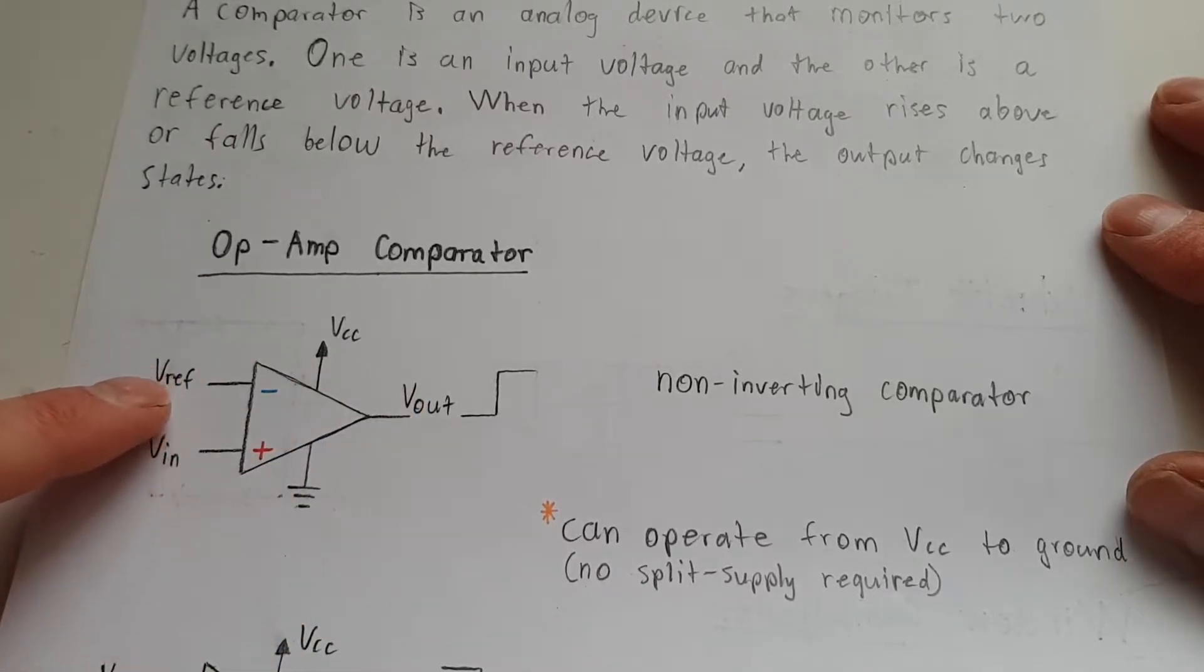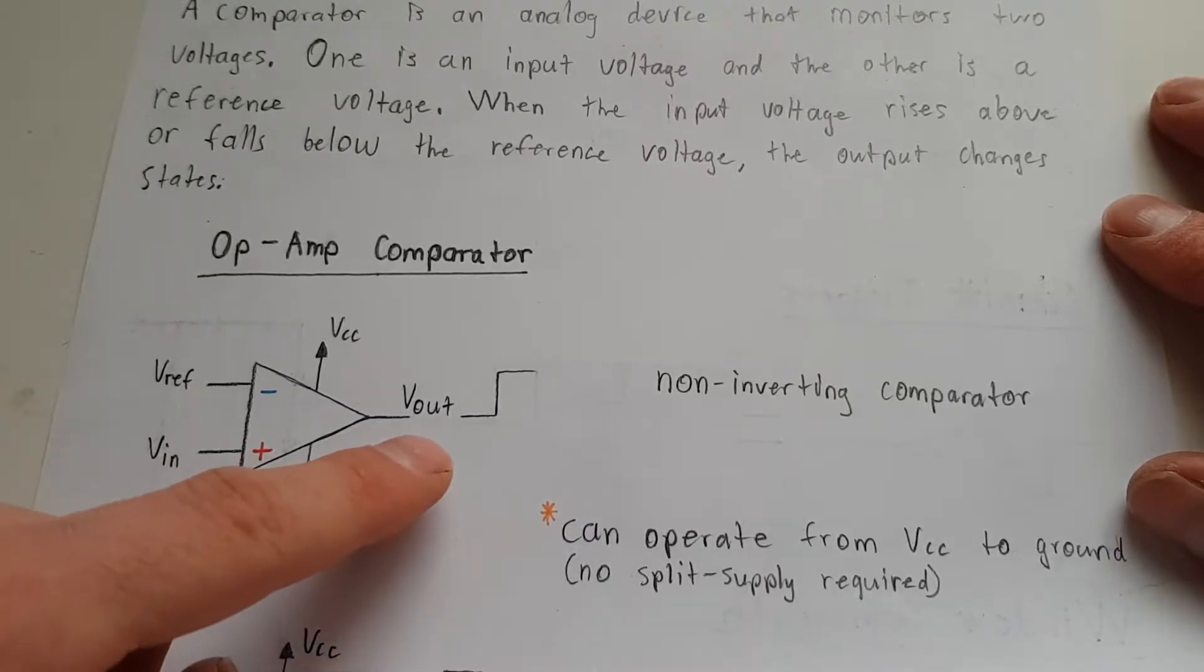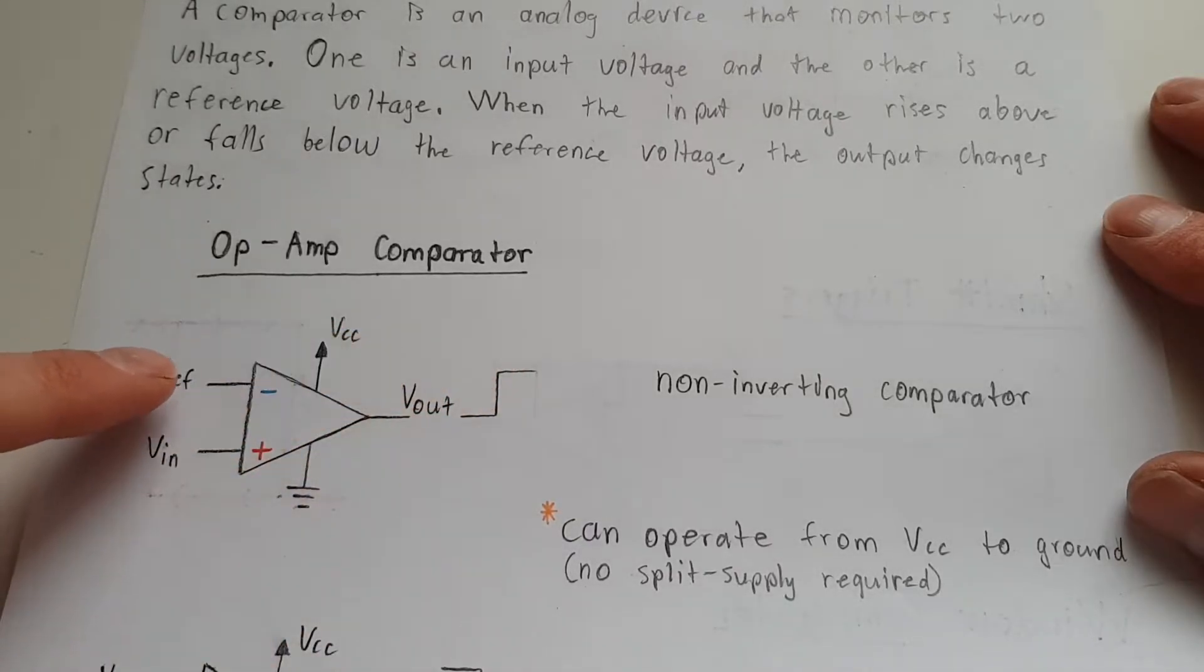So if you set one as a reference voltage, and it's from like a voltage divider, some known value, and then the input, perhaps a varying voltage, the output will swing when it crosses that reference.